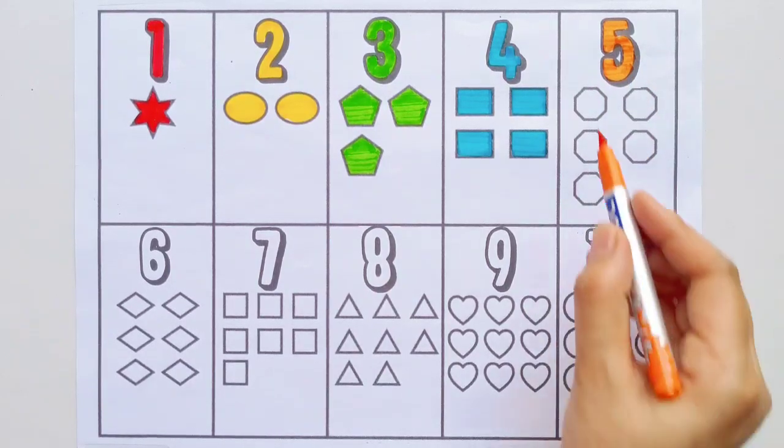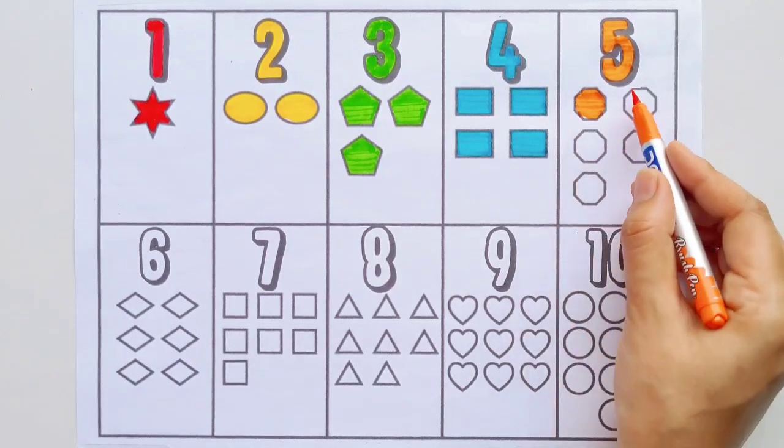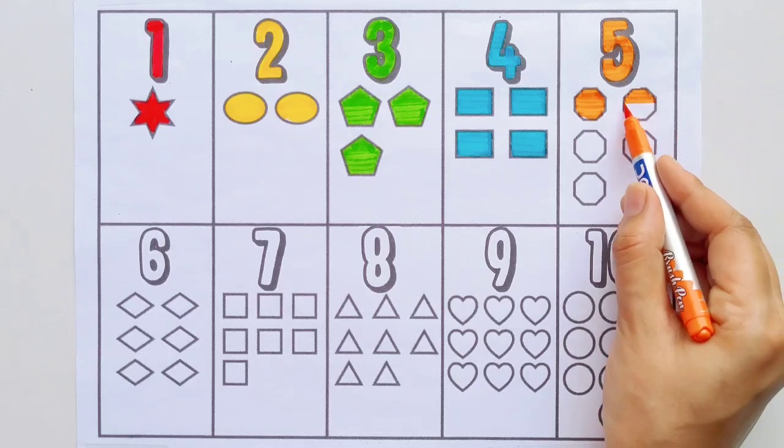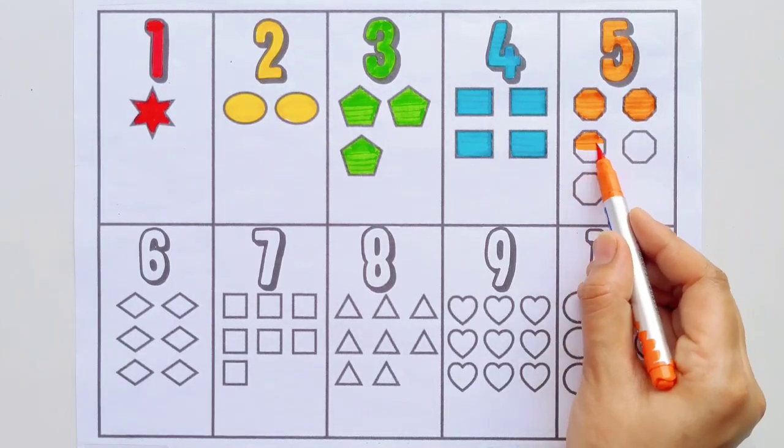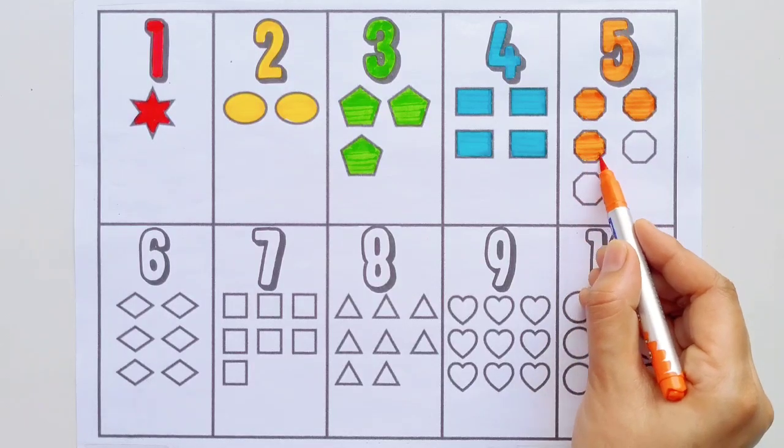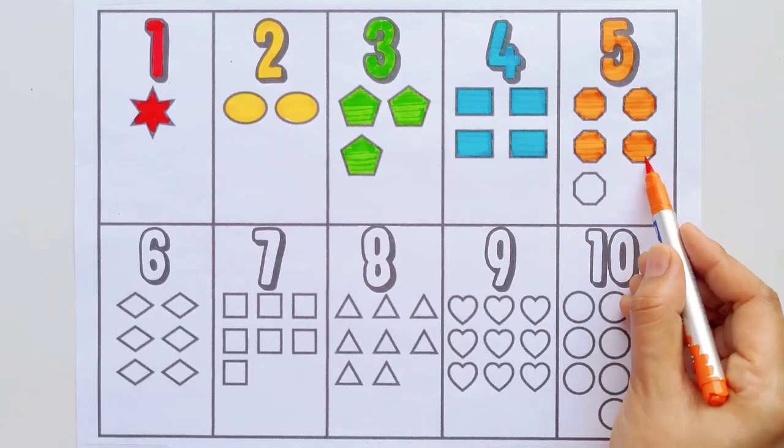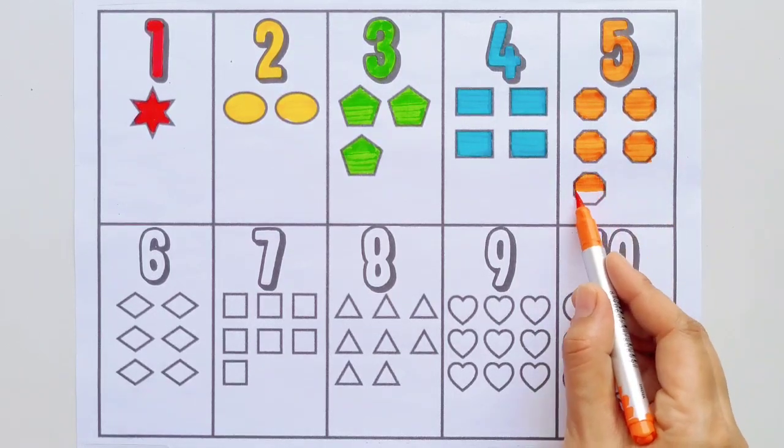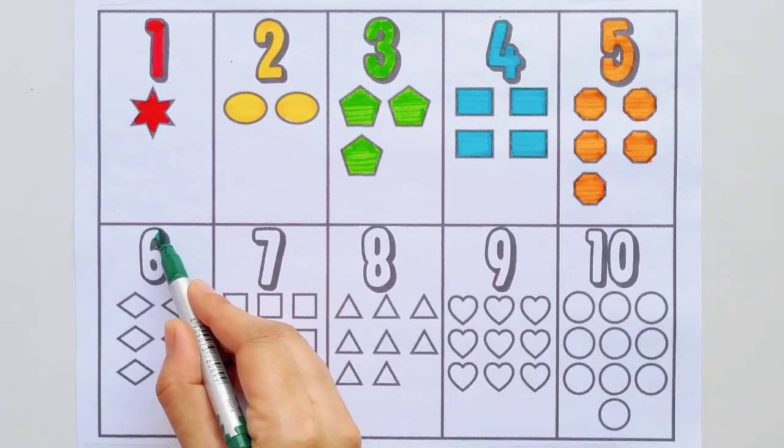Five. One, two, three, four, five. Five octagons, green color.